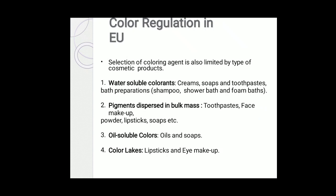There are different types of colors and water-soluble colorants. Water-soluble colorants are used in creams, soaps, toothpaste, and bath preparations such as shampoo, shower bath, and foam bath. Pigment dispersing bulk masses are used in products like toothpaste, face makeup, powder, lipstick, and soap. Oil-soluble colors are used in oils and soaps. Color lakes are used in lipsticks and eye makeup.